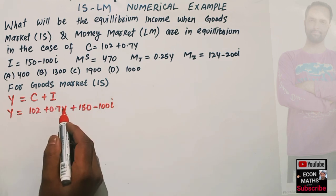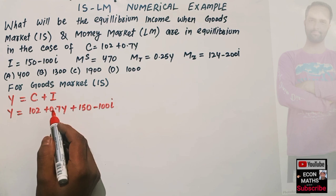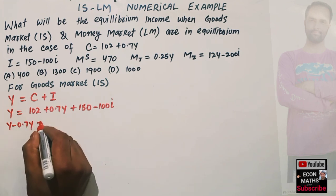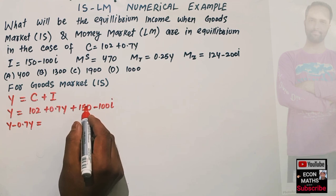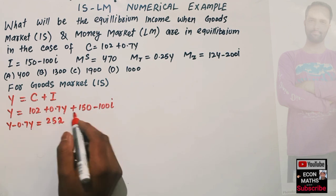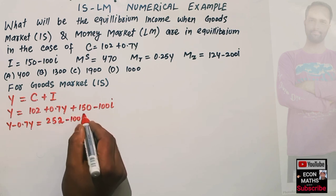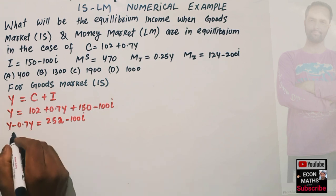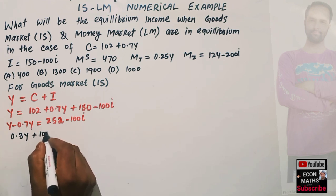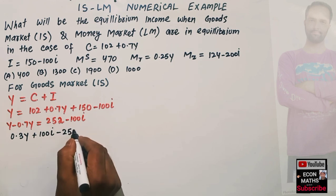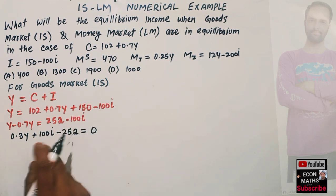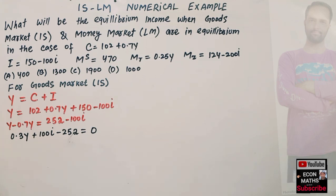Solving this, we transpose all terms: Y - 0.7Y = 102 + 150, which gives 0.3Y = 252 - 100i. Transposing again, we get 0.3Y + 100i - 252 = 0. This is our IS function.